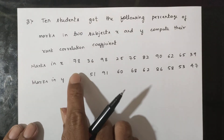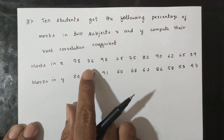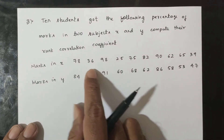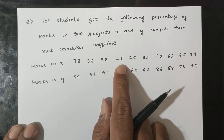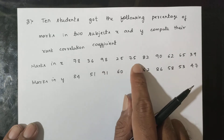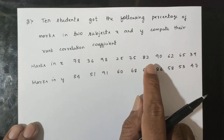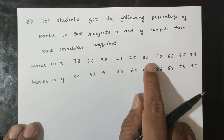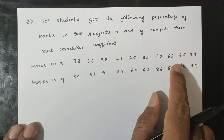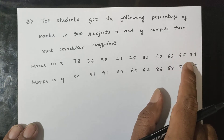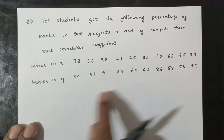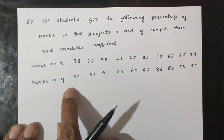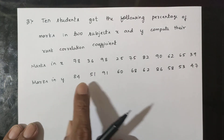Marks in X are: 78, 36, 98, 25, 75, 82, 90, 62, 65, 39.